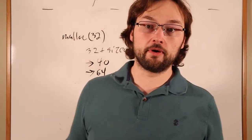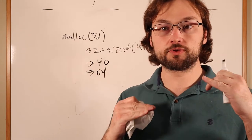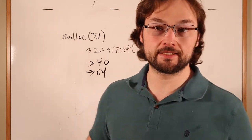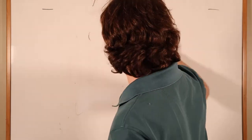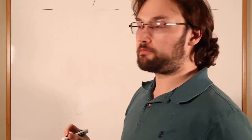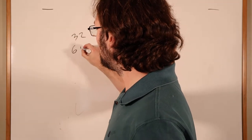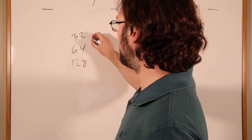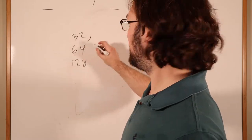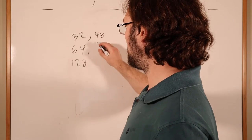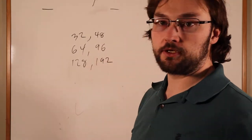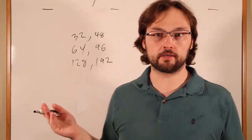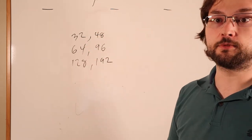The way a bucket allocator deals with this is it still only allocates specific size chunks, rounding up to the next chunk it knows how to handle, but it offers additional sizes beyond just powers of two. The simplest case is to offer powers of two plus a couple of extra values — the most obvious being the power of two plus the previous power of two. So the intermediate value between 32 and 64 is 48, between 64 and 128 is 96, between 128 and 256 is 192. But real-world bucket allocators offer more sizes than that.